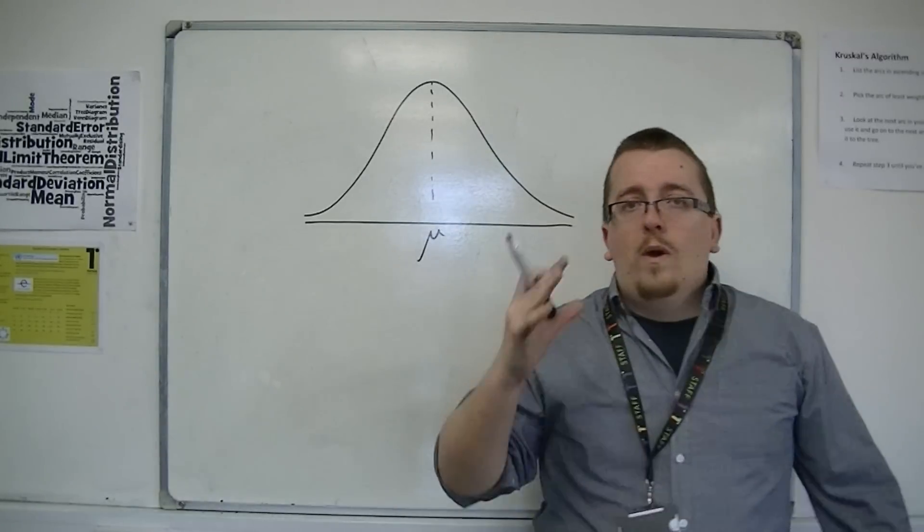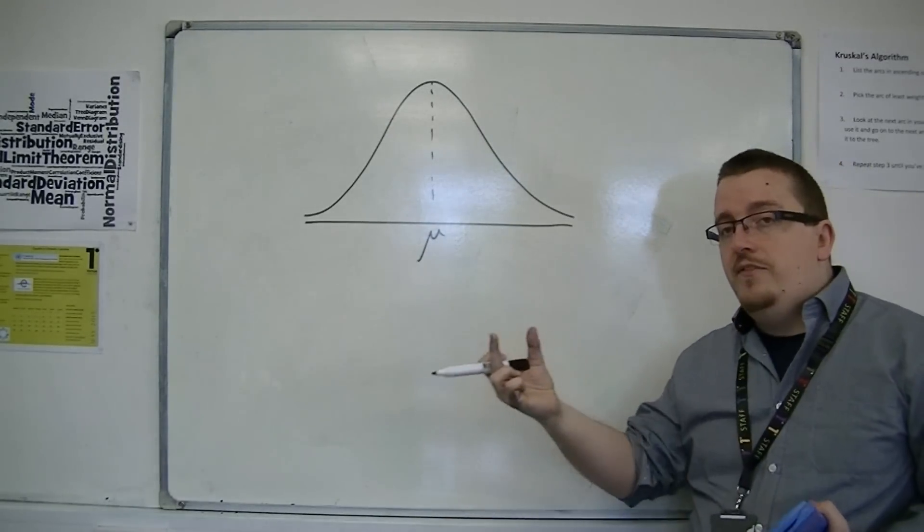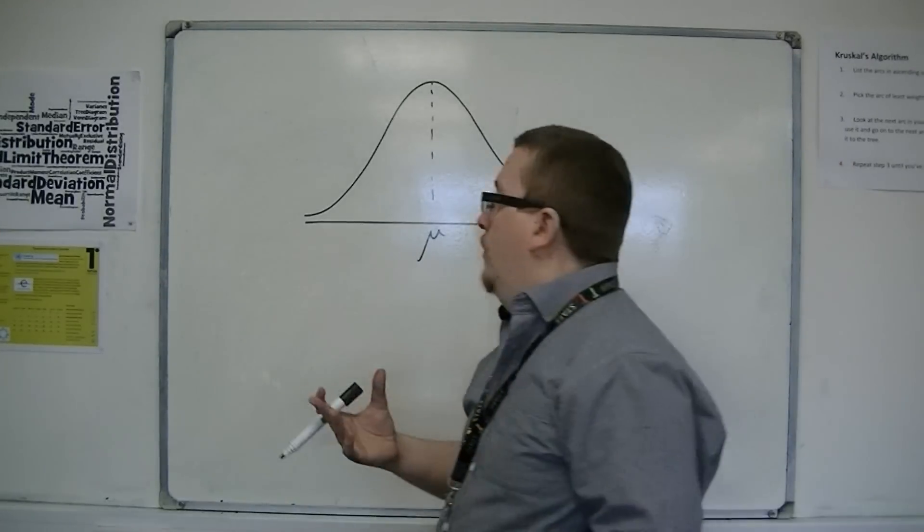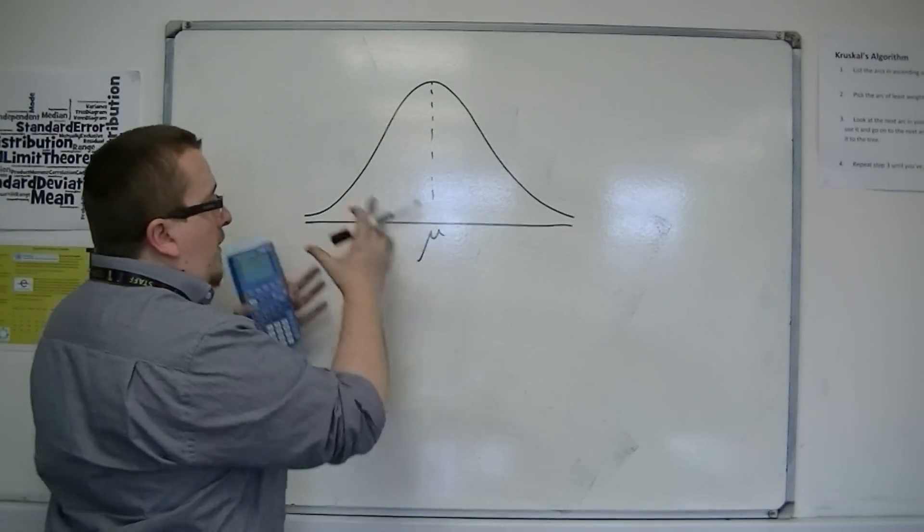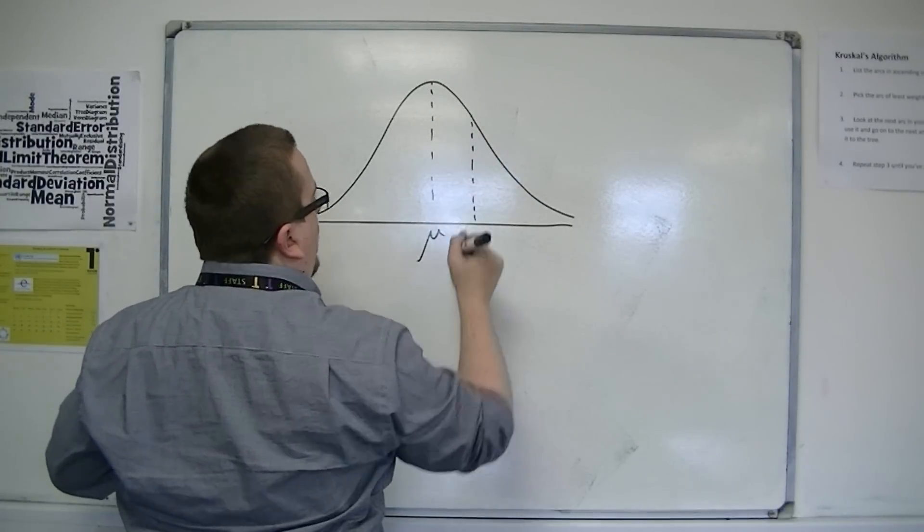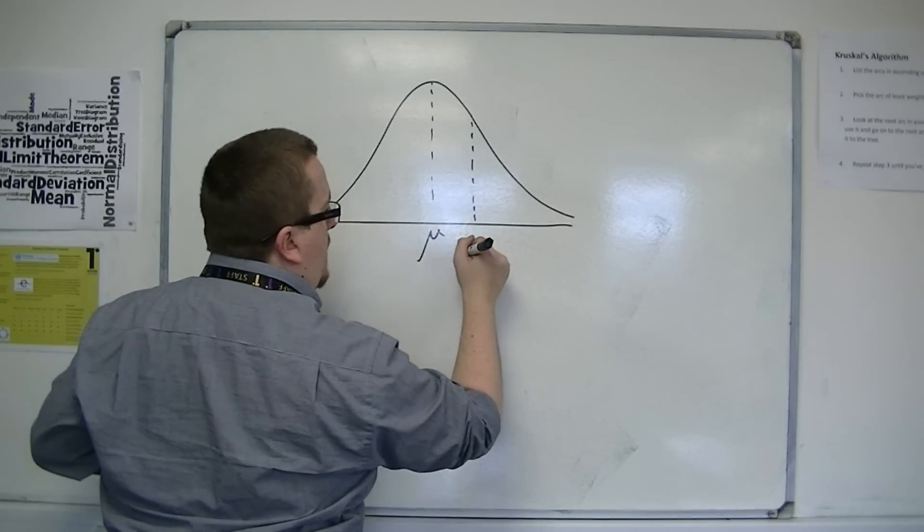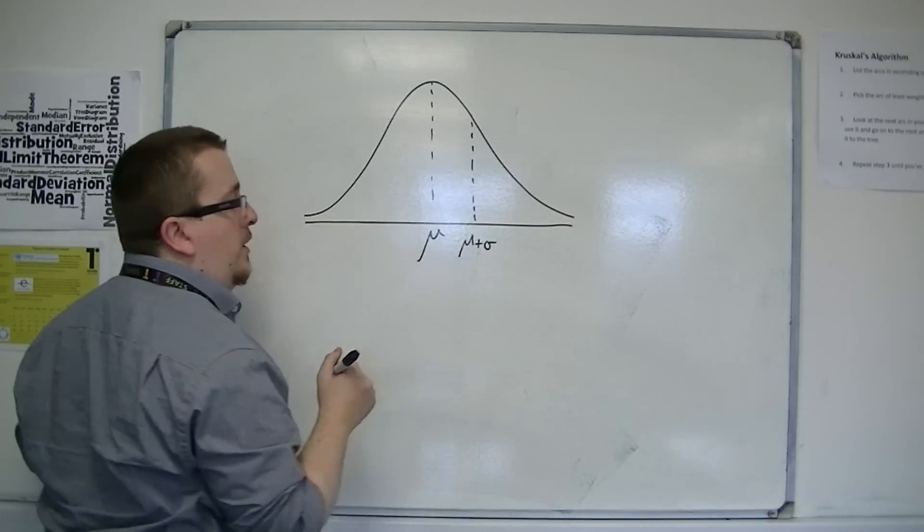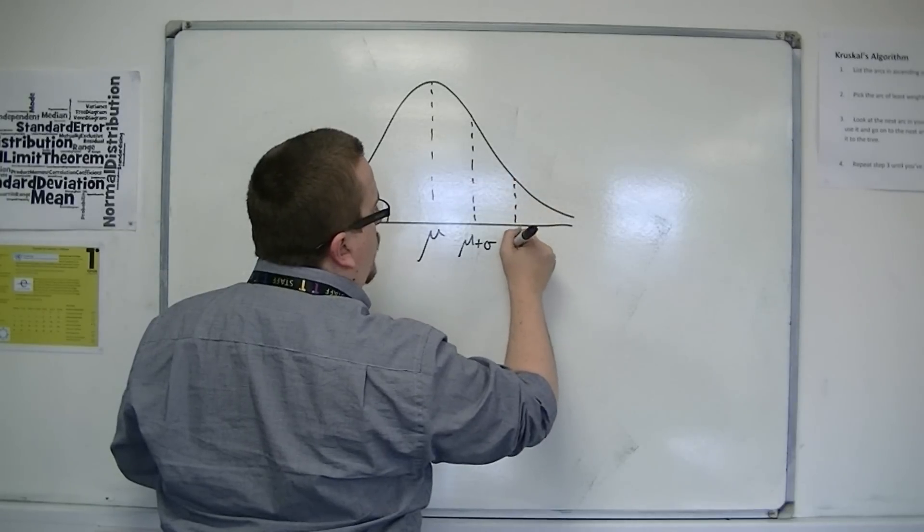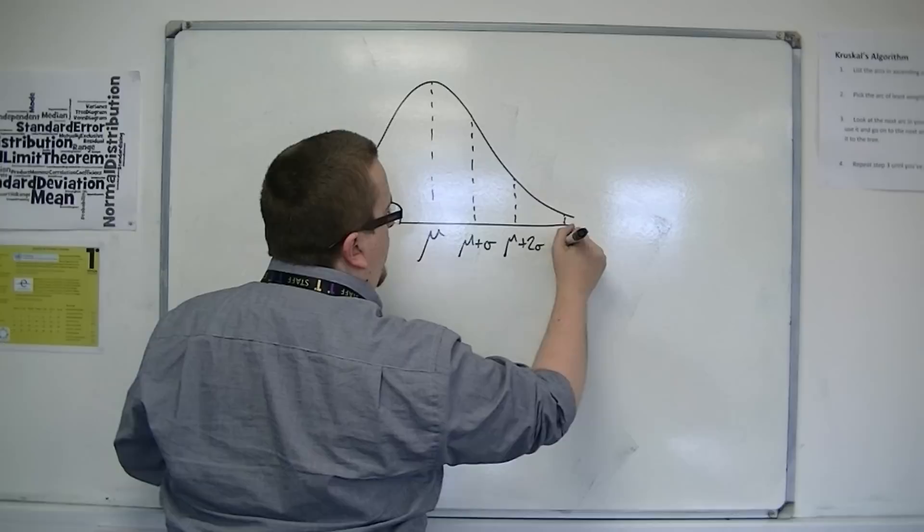Now away from the mean what we consider are standard deviations away from the mean. This is how we're going to be considering the bell curve. So a certain standard deviation away to the right would be mu plus that standard deviation, one standard deviation. Then I can go two standard deviations away and then I could go three standard deviations away.